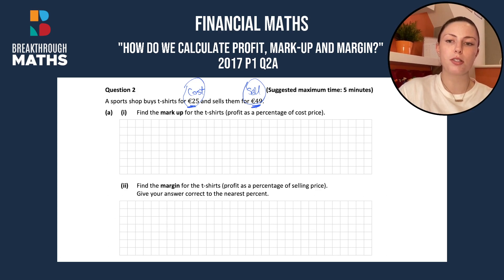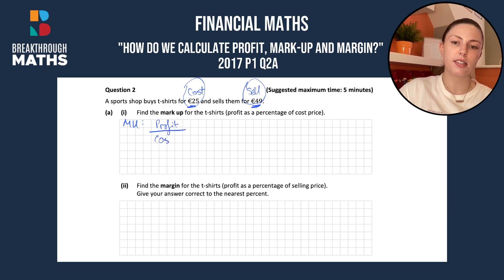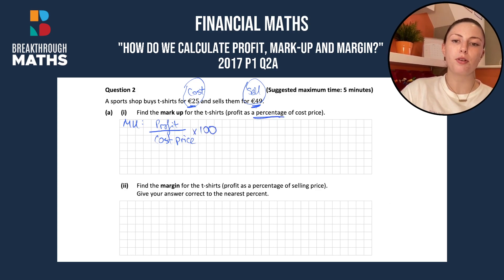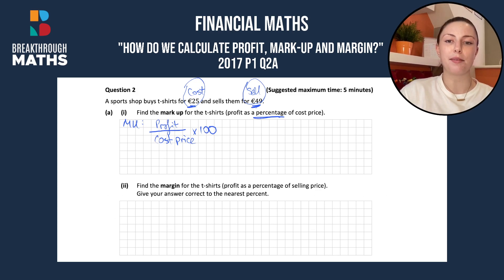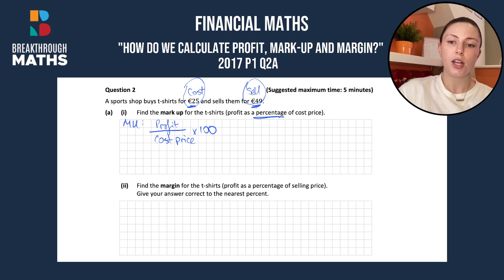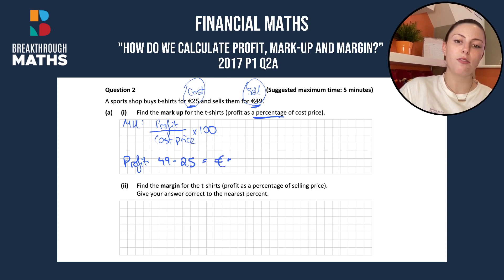To find our markup, we're told that markup is profit as a percentage of cost price, so we multiply by 100. We'll find our profit first — profit is the difference between the cost price and selling price. They buy them for €25 and sell them for €49, so profit is €49 minus €25, which is €24.